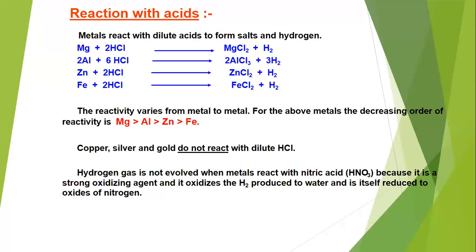In the case of copper, silver, and gold, they are less reactive than hydrogen. Hydrogen gives out its electrons more rapidly than copper, silver, and gold. That is why they will never liberate hydrogen gas even if reacting with concentrated acids — if they react at all, they give other products but never hydrogen gas.